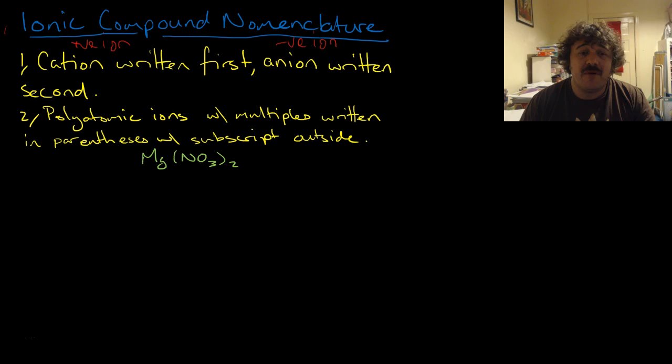Polyatomic ions with multiples, so if you've got more than one of it, it is written in parentheses like this. See, this is our example down here in the green, with the subscript on the outside. Do not put it here, do not make it N2O6. You write it out there so that ion stays together.